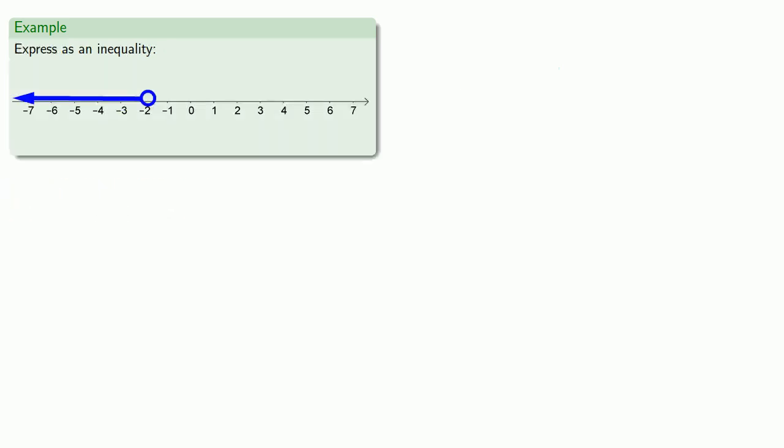We should also be able to go backwards. So we want to be able to take a graph like this and express it as an inequality. So first, we see that negative 2 is a boundary, but it's excluded because it has an open circle.